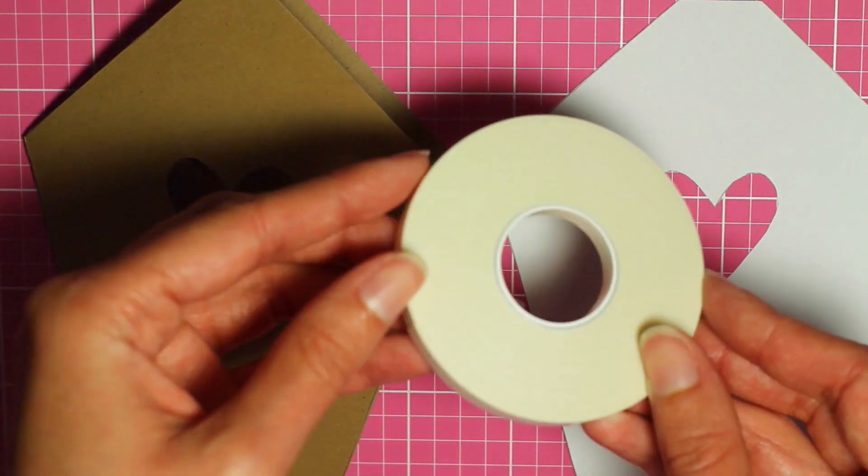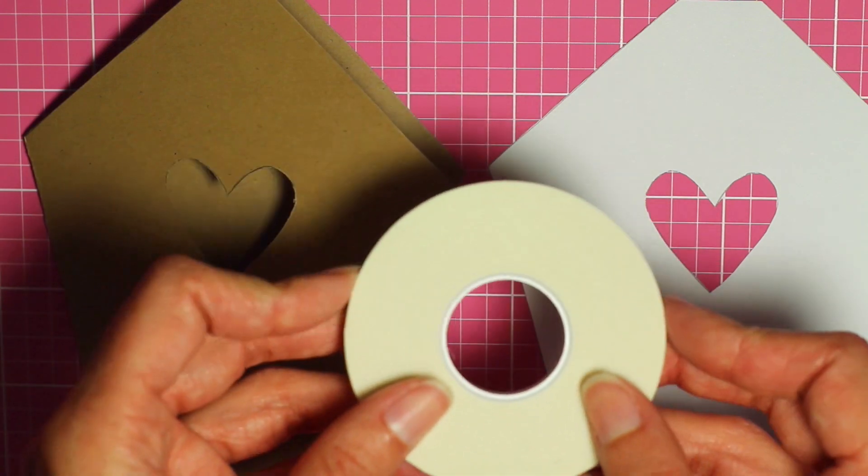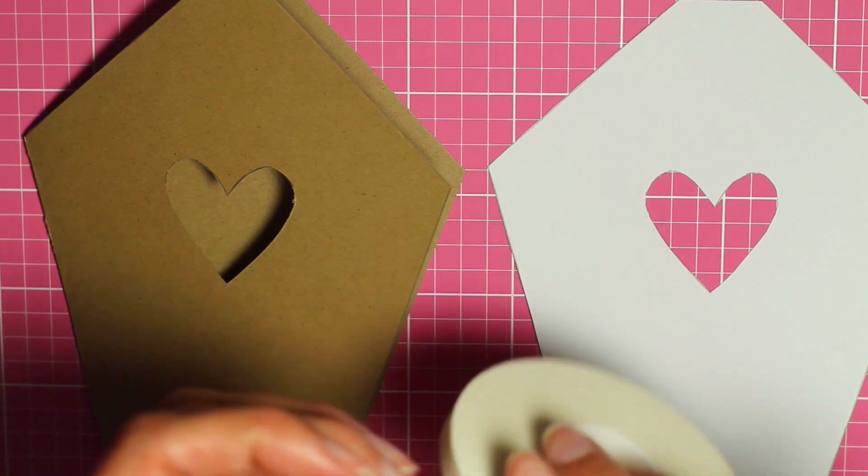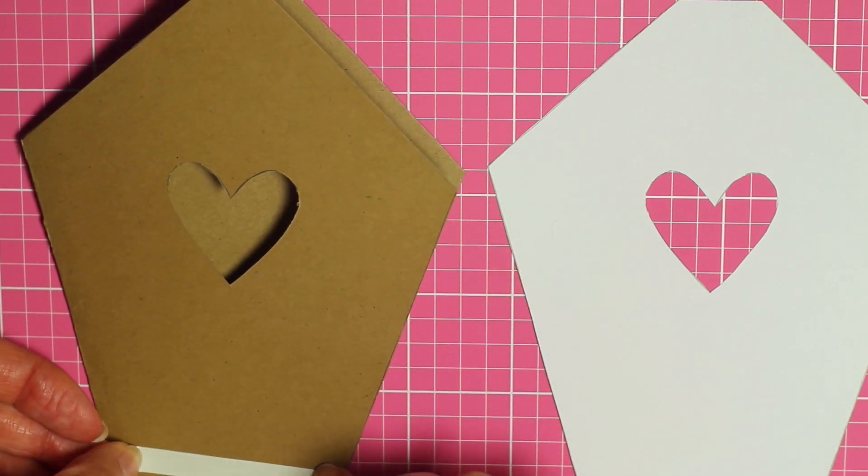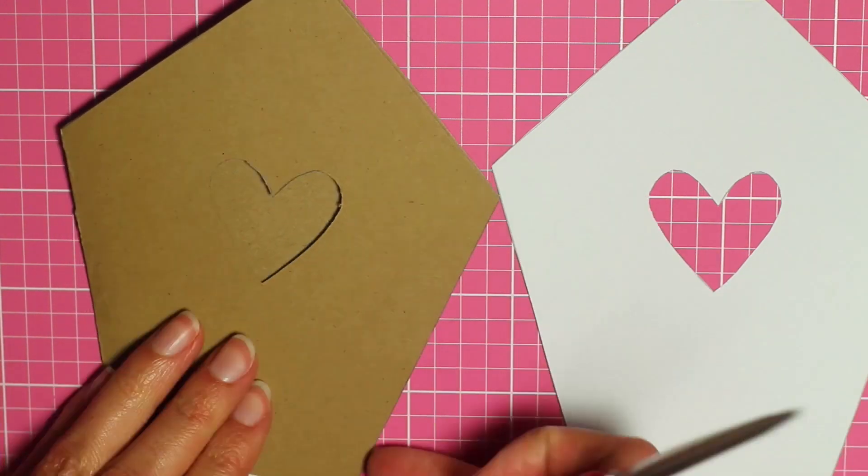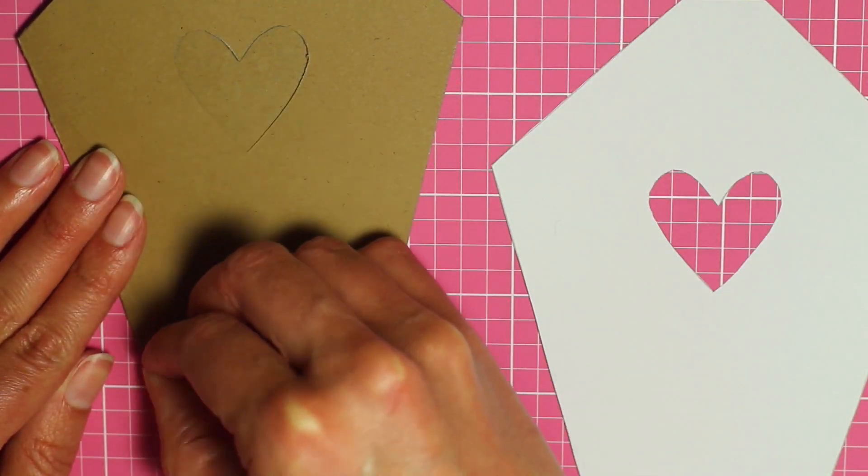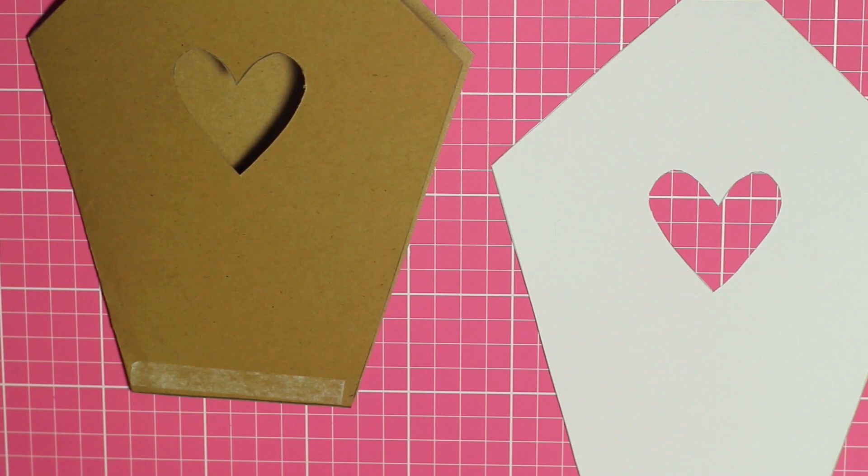Just turn it over so the good side is facing down and I'm using this easy tear tape to attach it to the front of the birdhouse and I will link this in the description. If you don't have any of this you should also be able to use a glue stick or something similar.